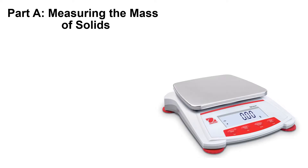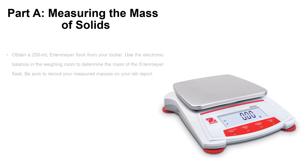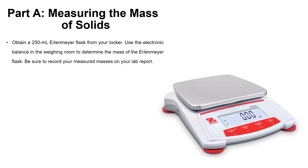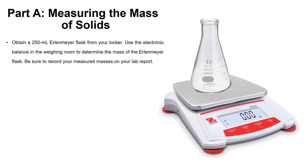Beginning with Part A, we're going to measure the mass of a solid. Obtain a 250 ml Erlenmeyer flask from your locker. Use the electronic balance in the weighing room to determine its mass, then record your measured mass on the lab report. This is what a 250 ml Erlenmeyer flask looks like. You're going to place it on the weighing balance, measure its mass, and record it on the lab report sheet.